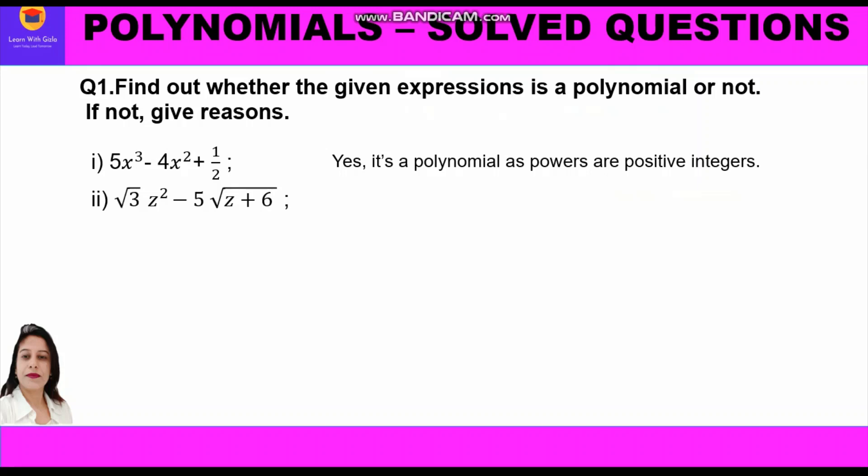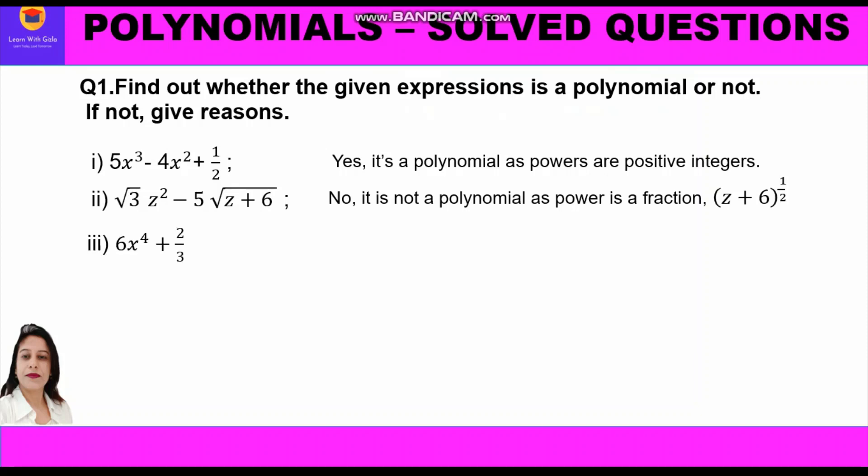Part 2: √3·z² − 5√z + 6. No, it is not a polynomial, as the power of z is a fraction. In exponential form, √z is written as z raised to power ½, which is a fractional exponent.